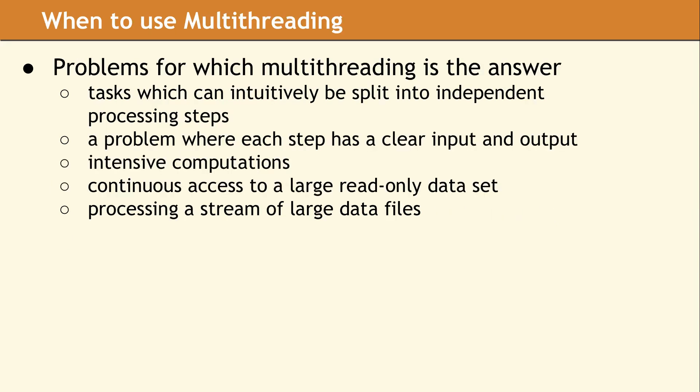So what sorts of problems naturally lend themselves to a multithreaded solution? One attribute to look for is a task which can be split up into individual steps, where each step has clear inputs and outputs. This is very useful because it gives you a clear division of responsibilities when you break the task down into individual threads. If your task involves a small amount of I/O and a great deal of computation, a multithreaded solution is likely to be a good one. If you have a large read-only dataset that needs to be processed in some way, this can also be done in a very straightforward way in a multithreaded design.